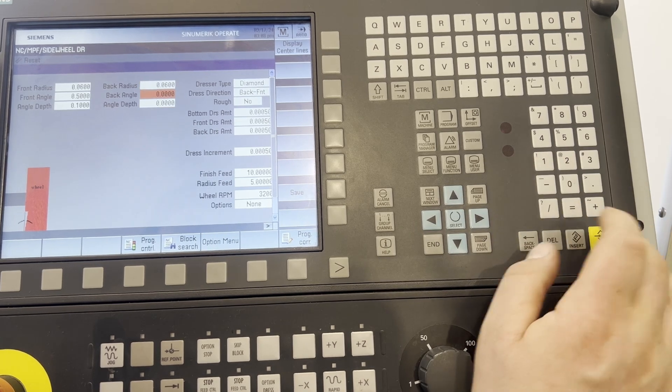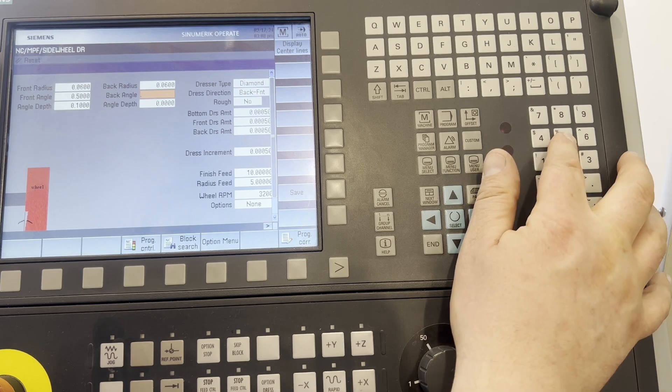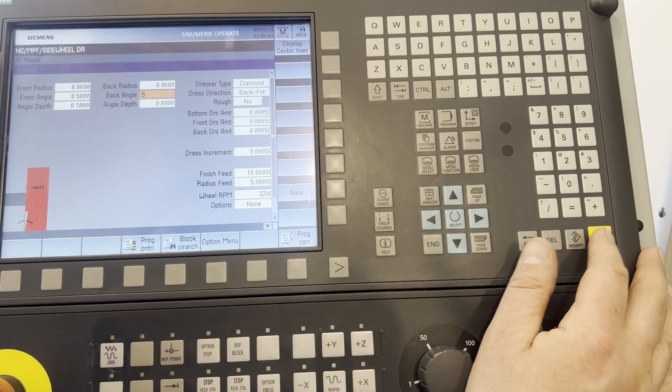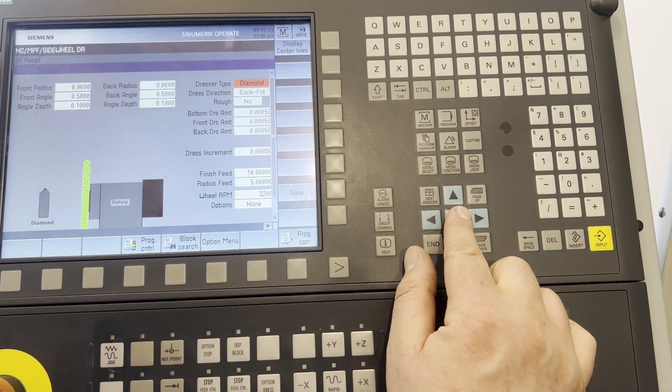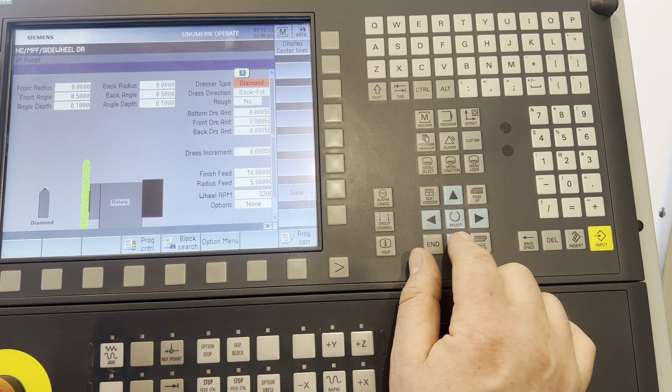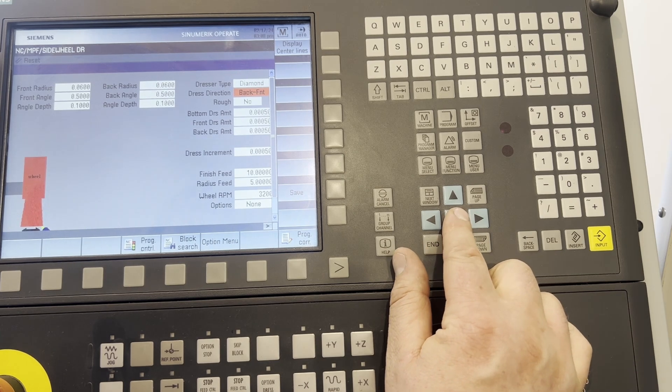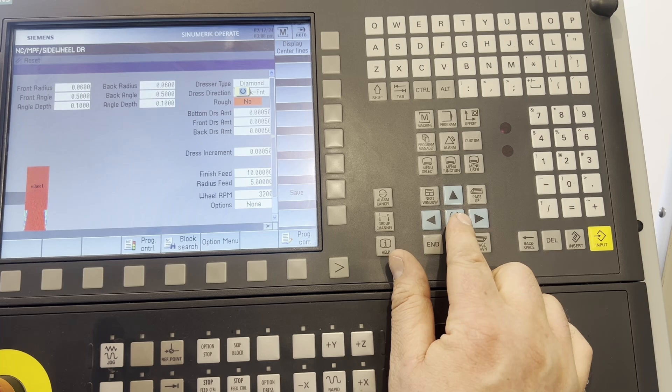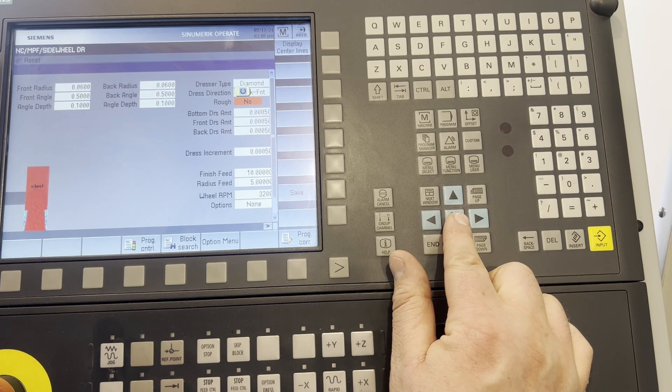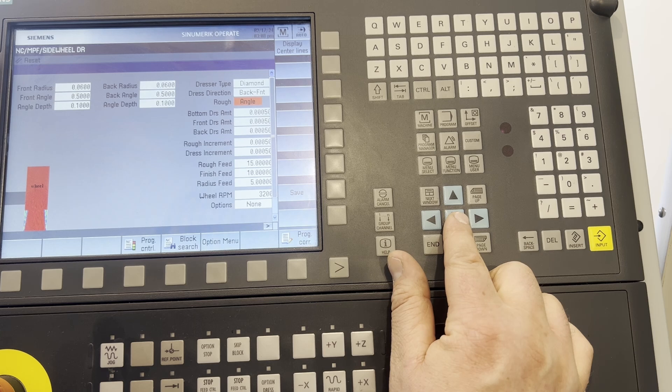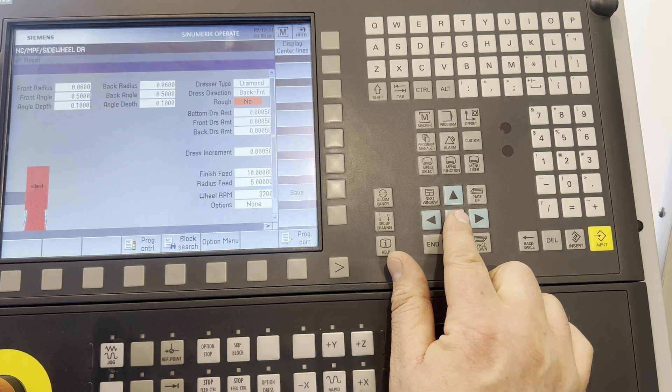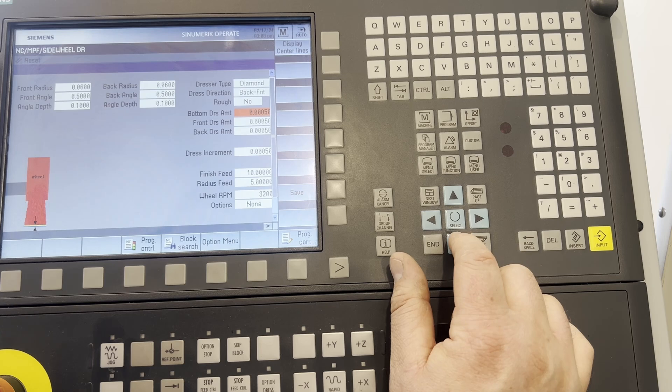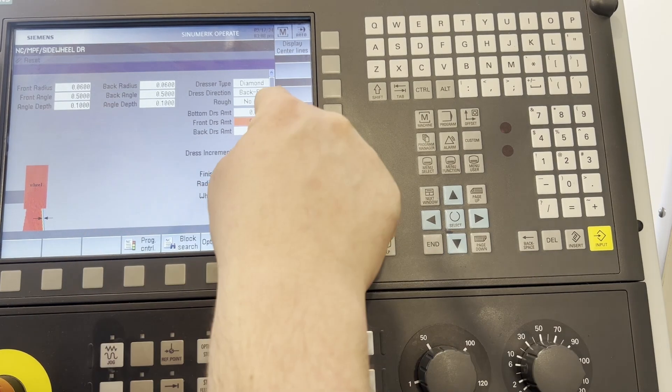Back radius same size, same half degree, we'll go up a hundred thousandths. Am I using a diamond or a rotary dresser, which direction, front back or back front? Do I want to rough? Most time for me it's no, but if you're breaking in a new wheel you might want to turn that on. Do you want to rough just the angle, the radius? If you only have like a ten thousandths radius, no sense roughing it.